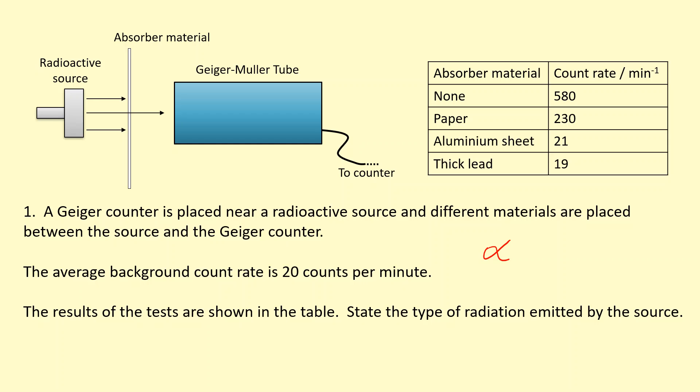And then we add an aluminum sheet and that's also causing the count rate to decrease. So this is also emitting beta as well. So it's emitting alpha and beta for sure. And then you see here, with aluminum sheet, which is going to stop the alpha and the beta, we've got roughly the background count rate.